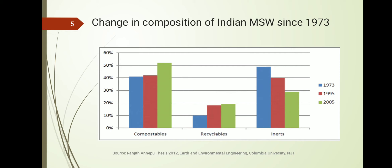The positive finding is that the compostable or biodegradable material percentage increased from about 40% to 50% over 30 years, and recyclables also increased from about 10% to nearly 20%. The inert material has been reducing — from around 50% down to about 30%, a 20% reduction. This data goes up to 2005, and now being 2021, following the trend we can predict the inert material is likely even lower today.